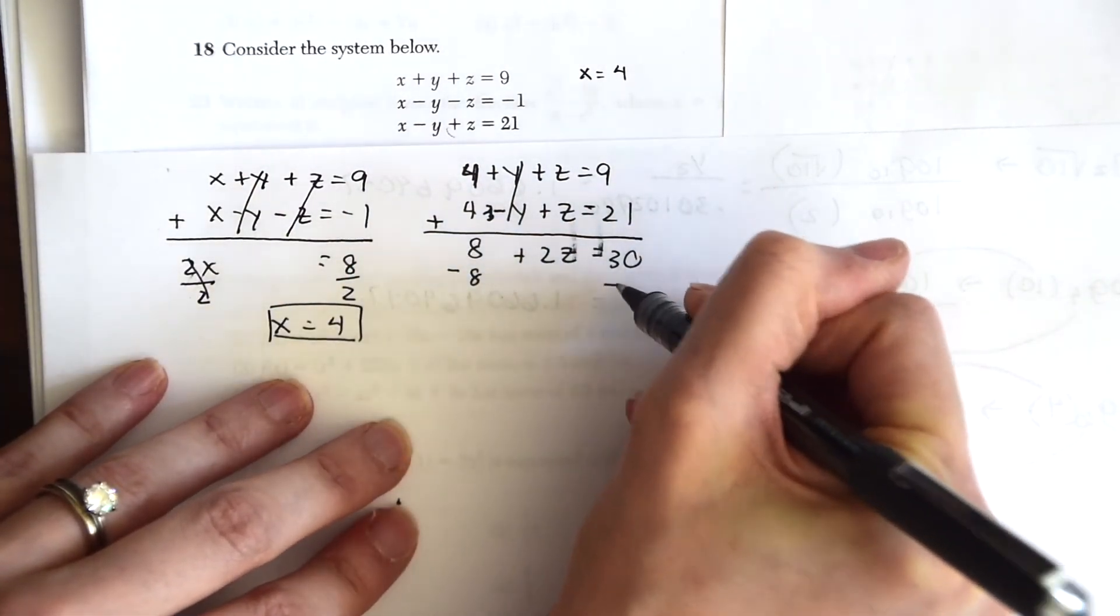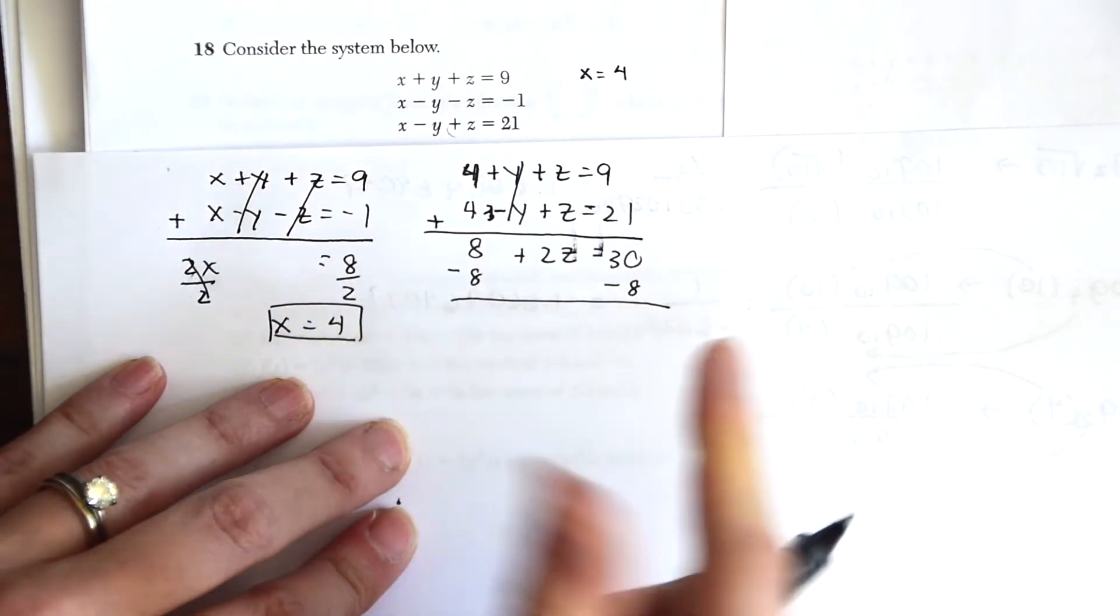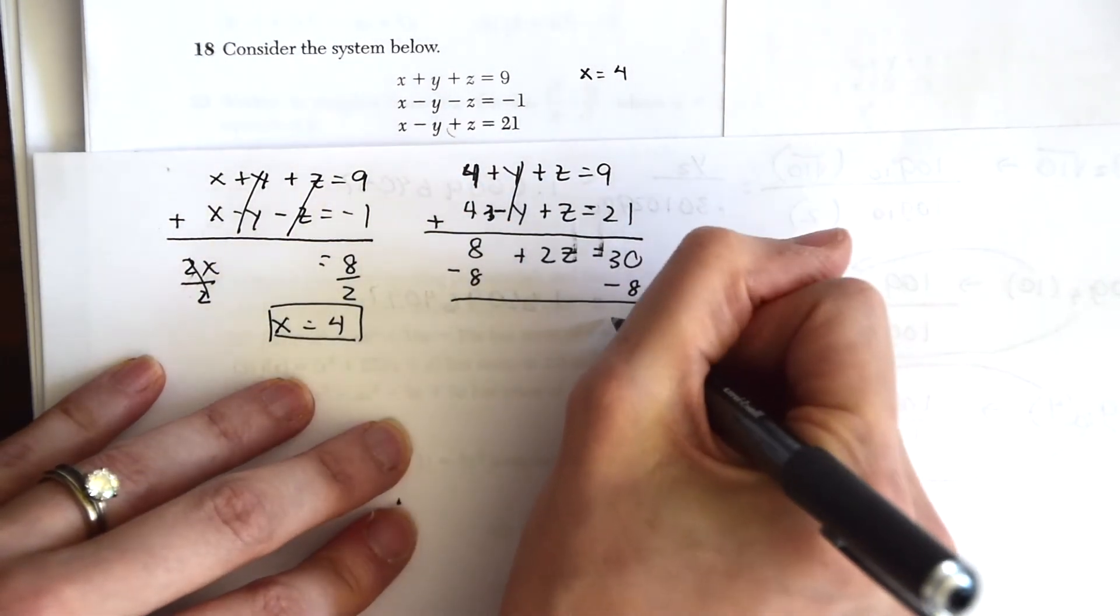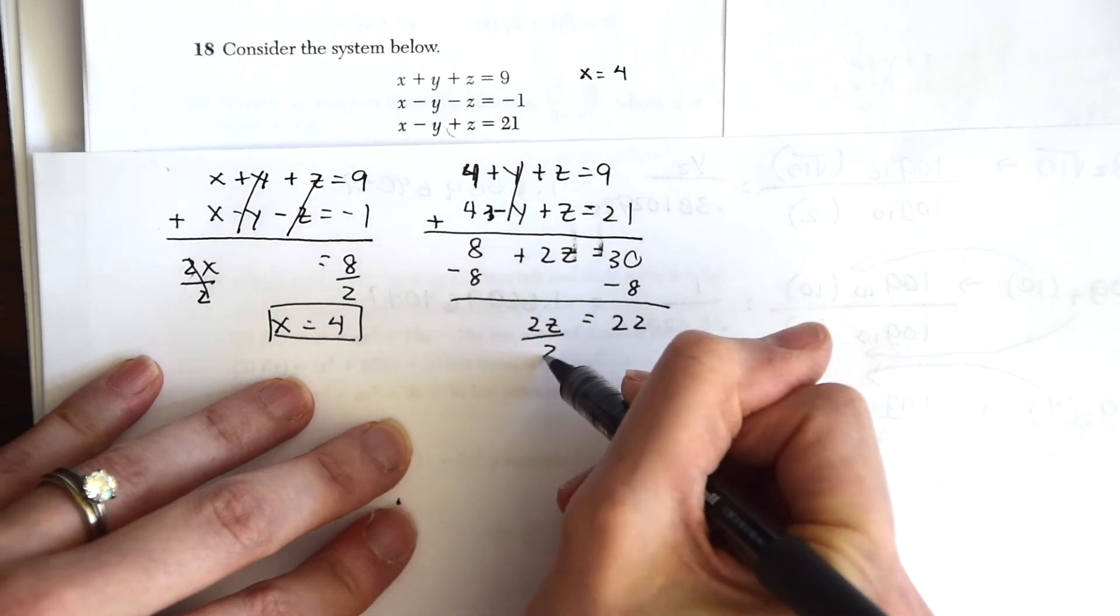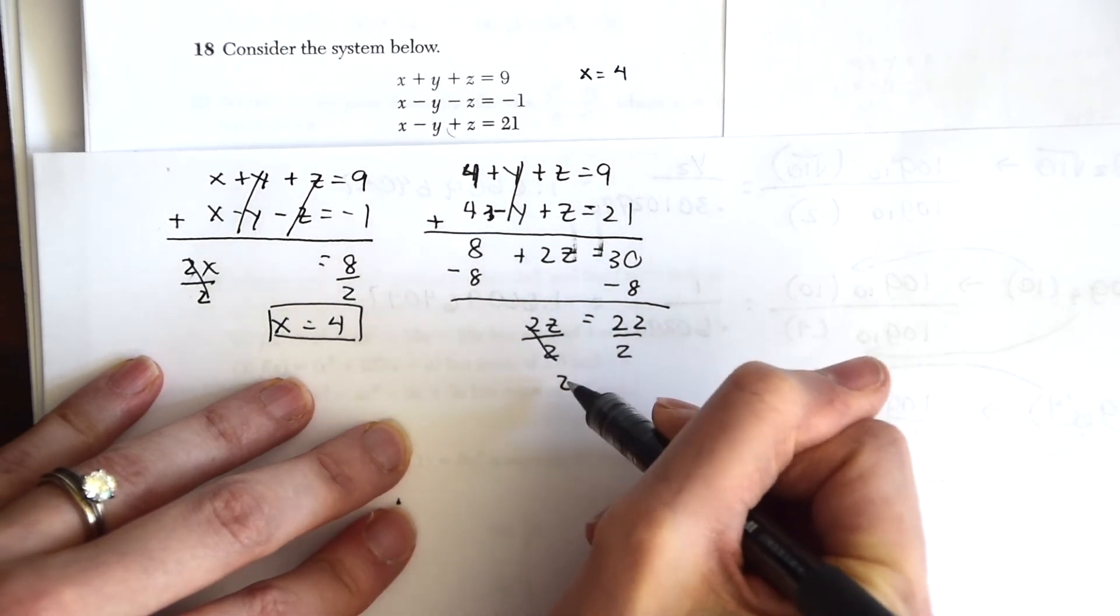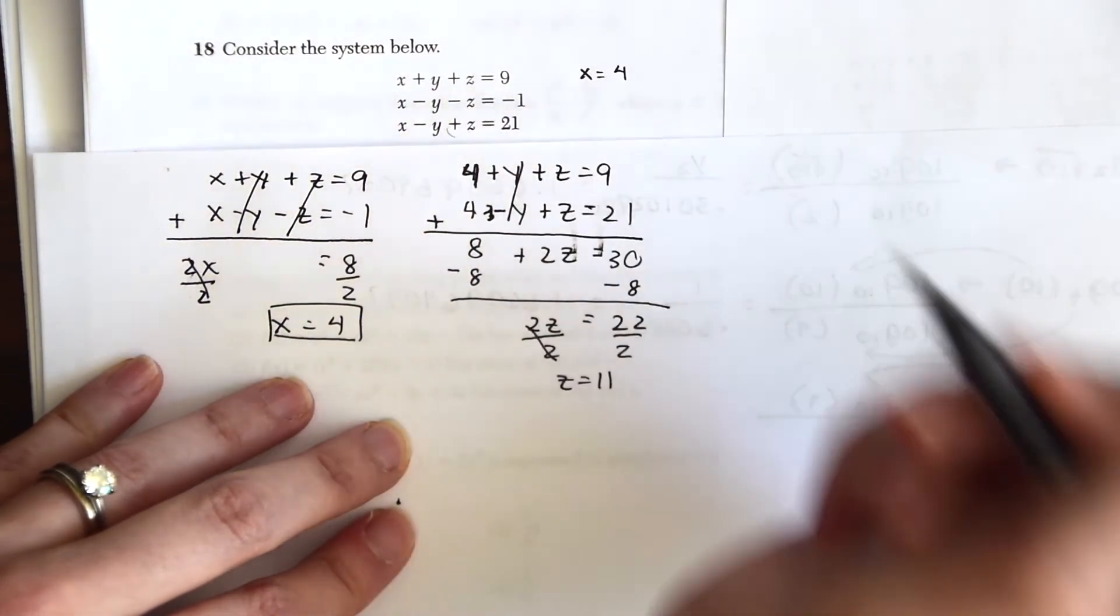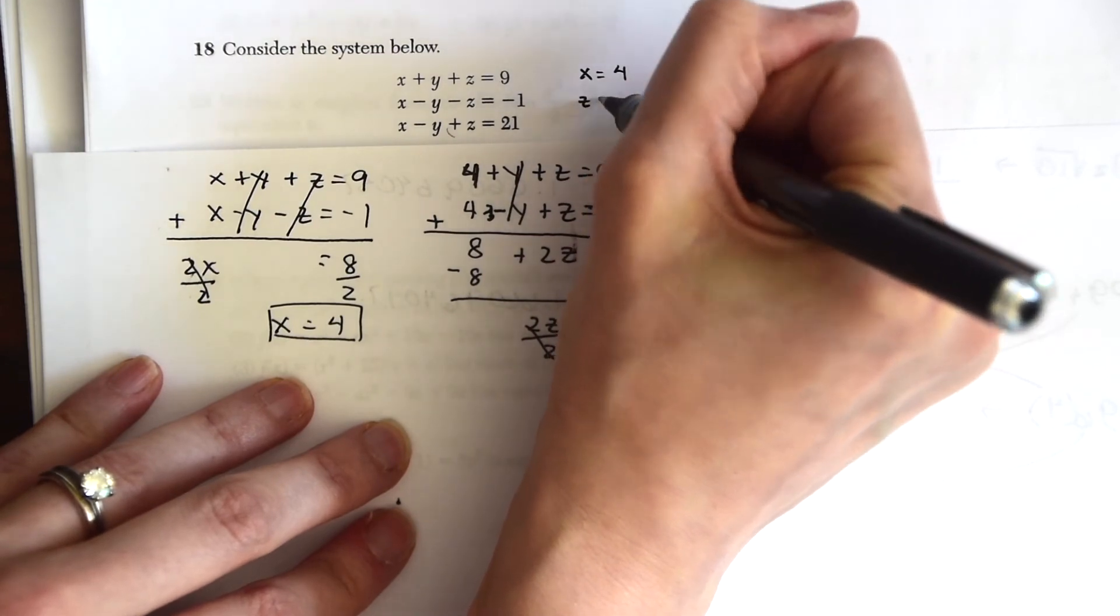So we have subtract 30 minus 8. We want to subtract 8 from both sides. This gives us 22. So 2z = 22, divide by 2 on both sides, and then we get z = 11. So we know that x = 4 and z = 11.